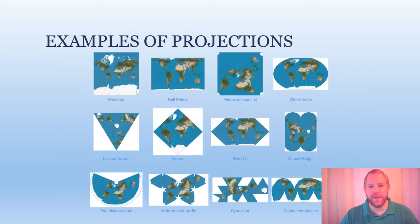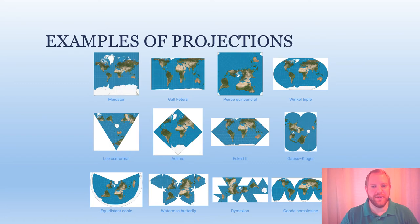The combination of projection surfaces and aspect has led to many techniques for projecting the earth's surface onto a map. As you can see from the examples here, they range from the familiar to the downright strange. On the top row are some examples that you may be familiar with, such as the Mercator and the Winkel Tripel.